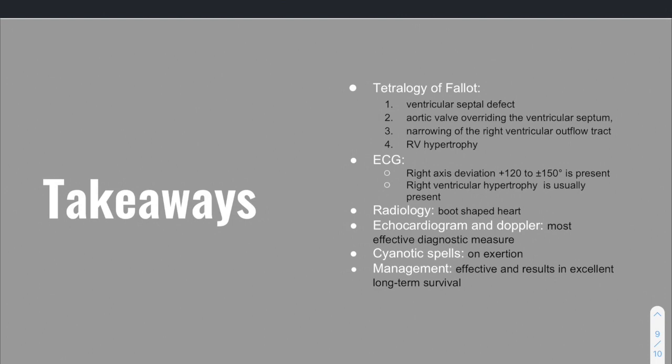So what are our main takeaways? Tetralogy of Fallot, we know is a congenital heart disease with four components. Ventricular septal defect, aortic valve or overriding aorta, narrowing of the right ventricular outflow tract, and the right ventricular hypertrophy. And again, this right ventricular hypertrophy is what we're seeing on the ECG with those diagnostic findings. Right axis deviation greater than 110 degrees with the tall R waves in V1 and large S waves in V5 and V6.